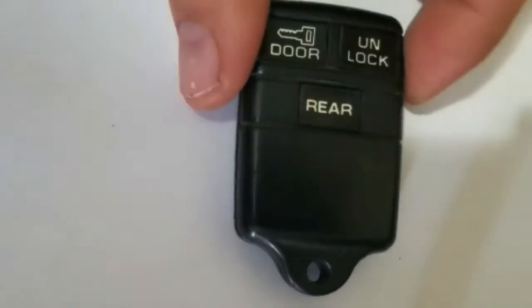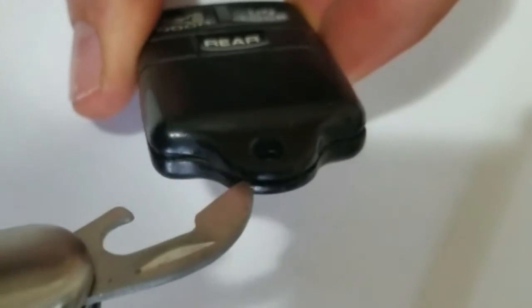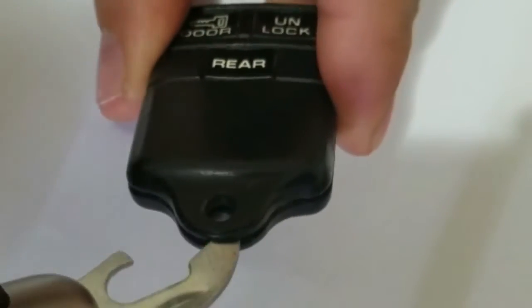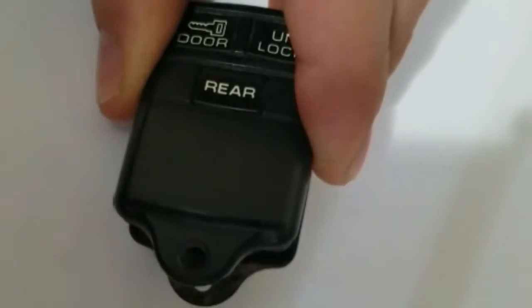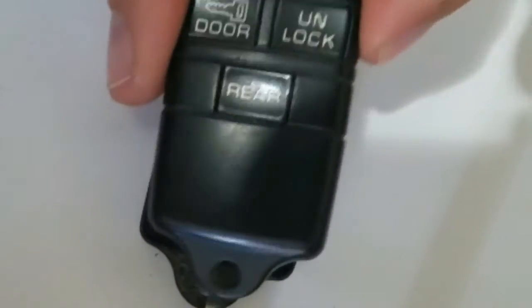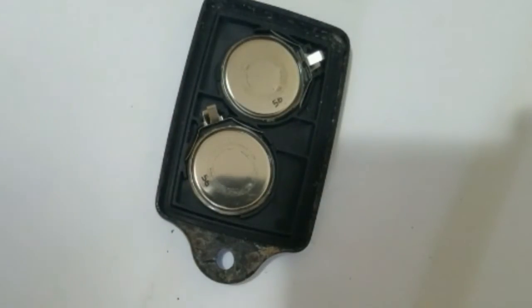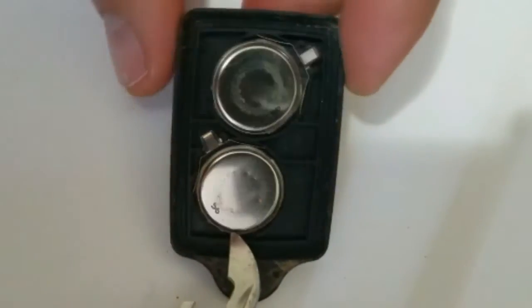To change the battery in this key fob, look right here on the side. Use a flat screwdriver to separate the key fob into two parts. This is the upper part, you can remove that. Right here you have two batteries.